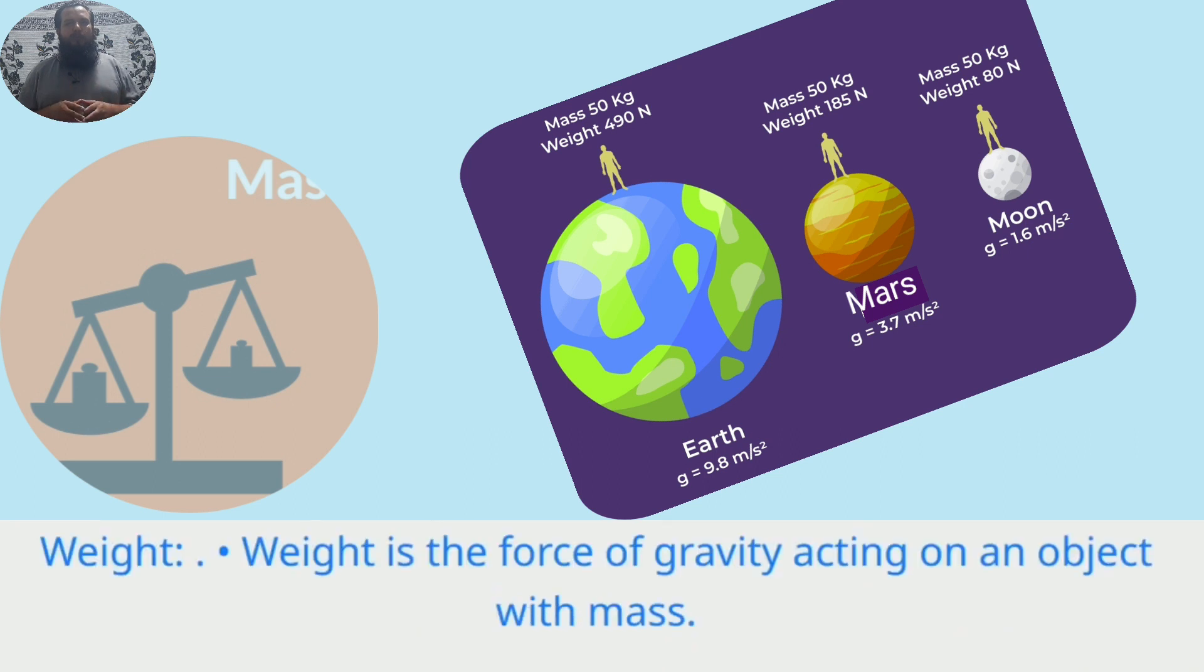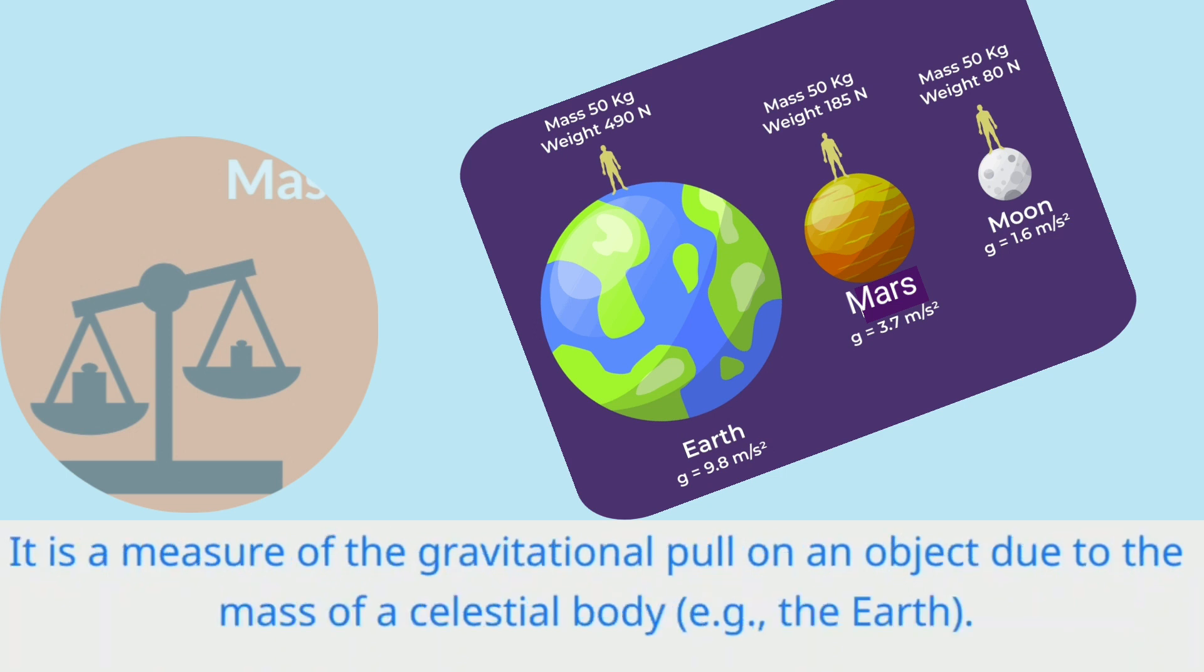Weight is the force of gravity acting on an object with mass. It is a measure of the gravitational pull on an object due to the mass of a celestial body, for example the Earth.